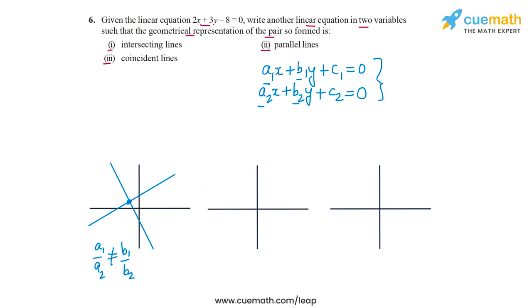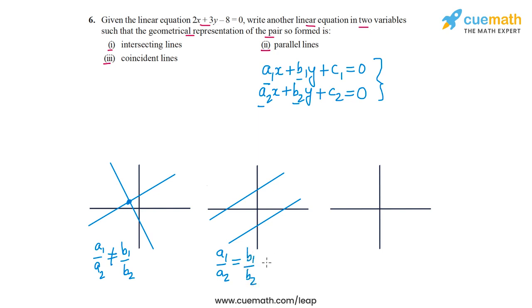The second possibility is that the two lines are parallel, in which case the system has no solution because the lines never intersect. This happens if a1 by a2 is equal to b1 by b2, but both these ratios are not equal to c1 by c2.